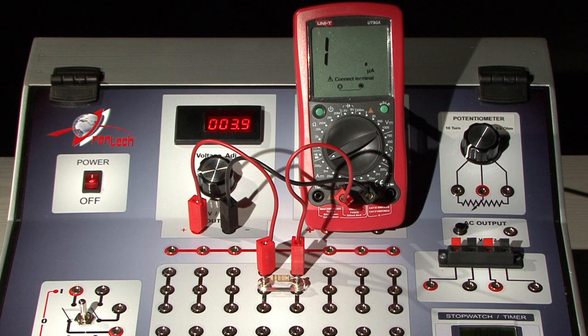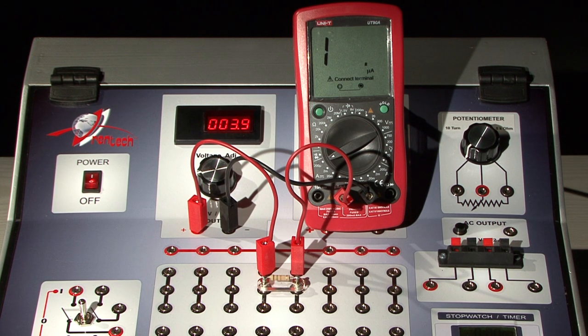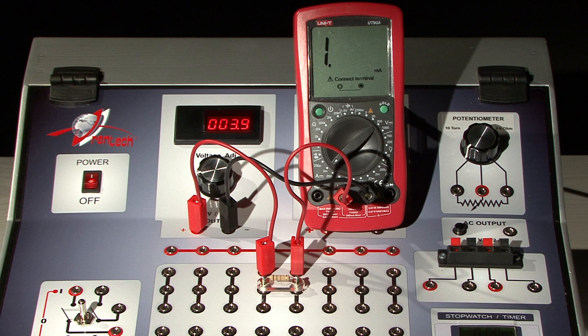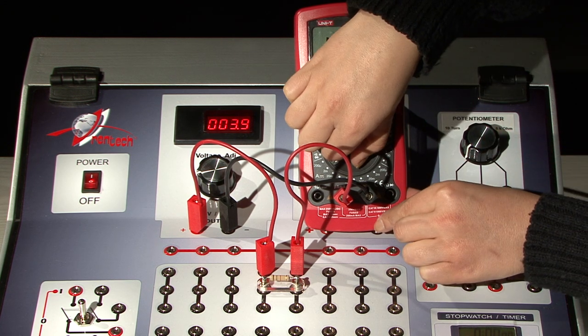We observe which ranges are suitable for measurement and which ones are not, and which one is the most precise. Since the current flowing is larger than 200 microamperes and 2 milliamperes, we cannot measure the current using these ranges.